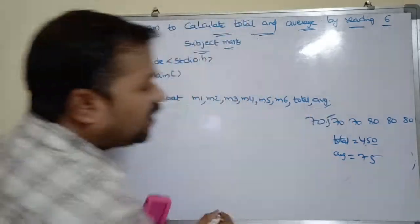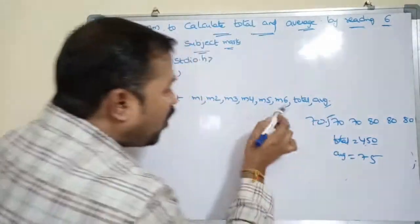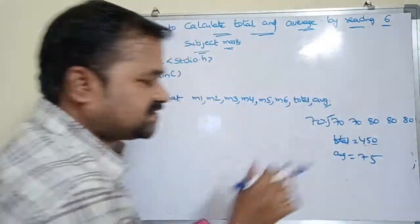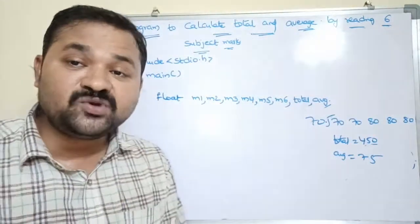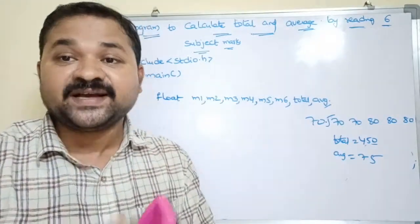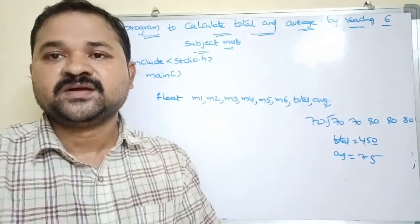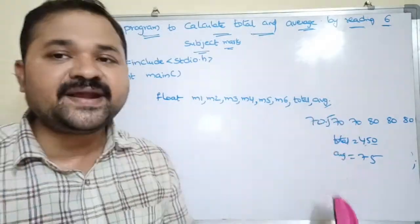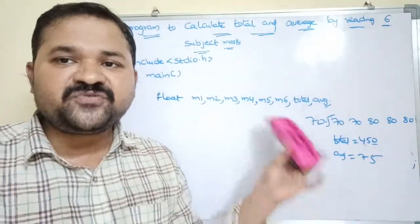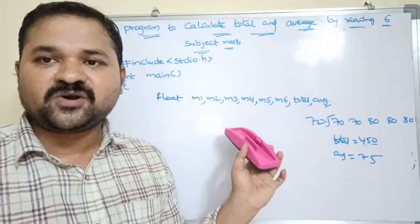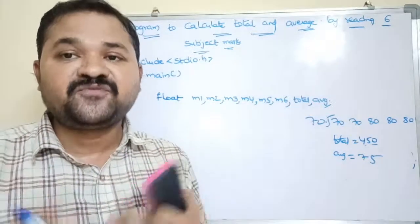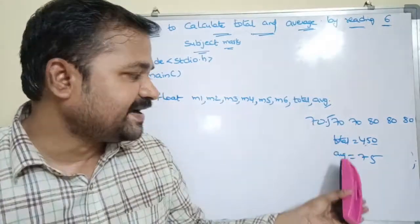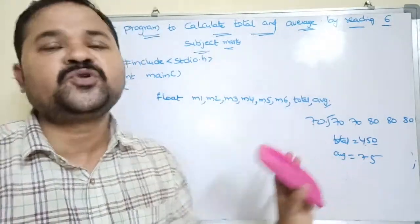So in this program, what are the input variables? Marks are nothing but input variables — input variable means we have to supply the marks. Whereas what are the output variables? Output variables means which values we have to display. We have to display total and average. So input variables are m1, m2, m3, m4, m5, m6, and total and average are the output variables.